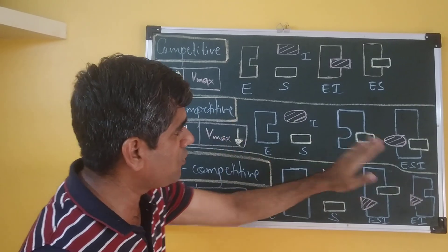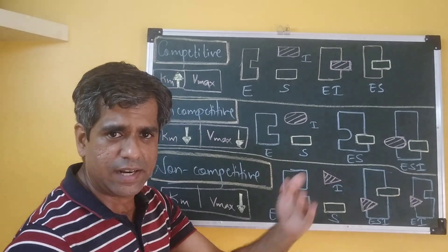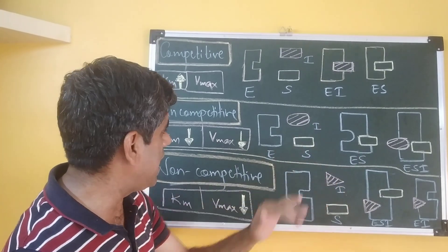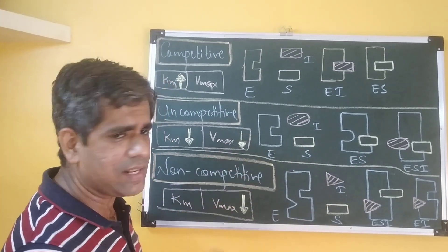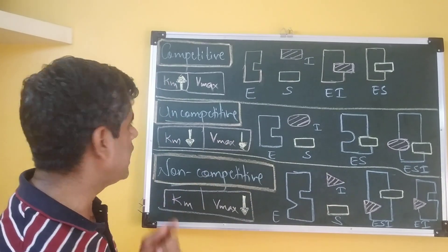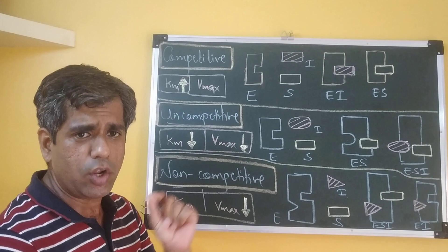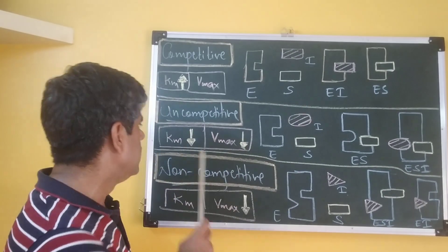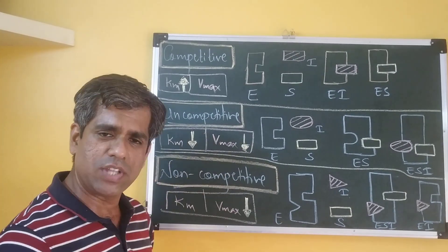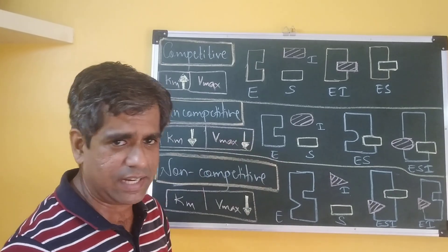Once the ESI complex is formed, a dead-end complex is reached. So in any case, the value of Vmax decreases. Therefore, in the presence of a typical uncompetitive inhibitor, both Km and Vmax — the apparent values — decrease.